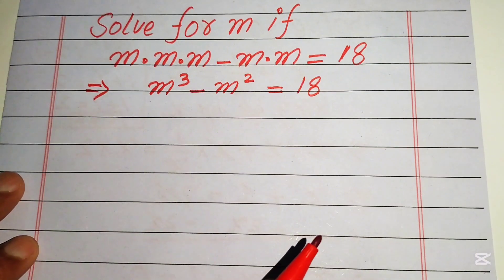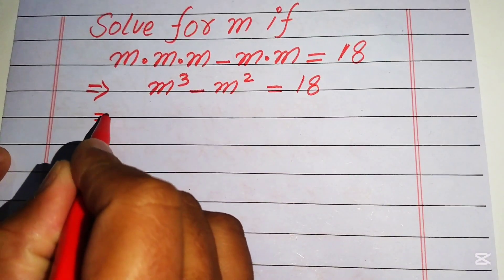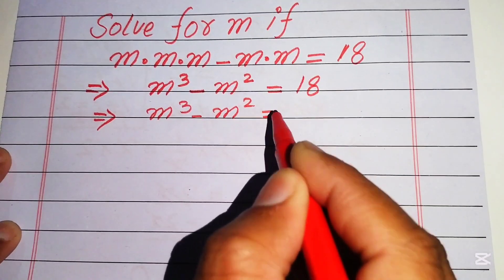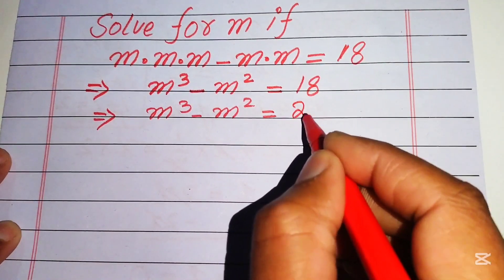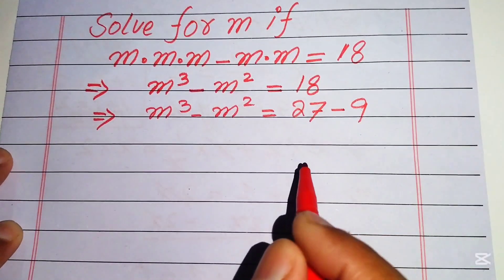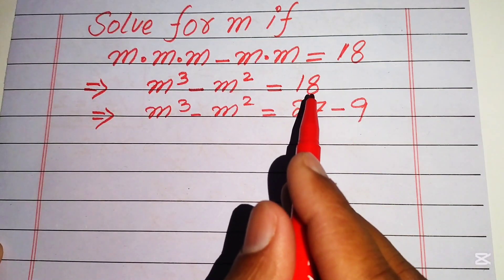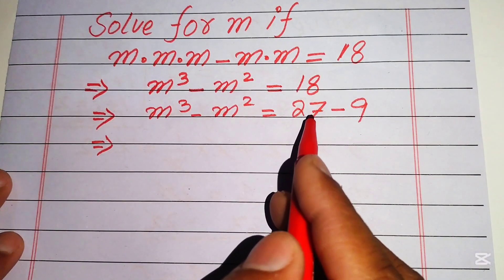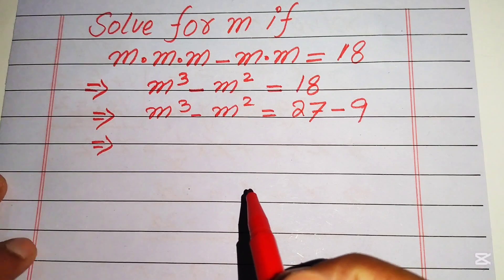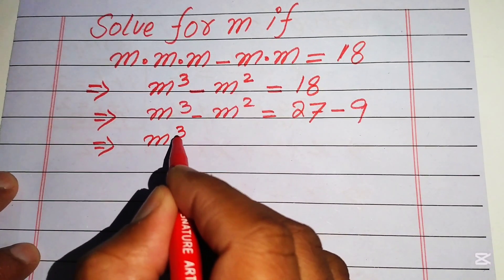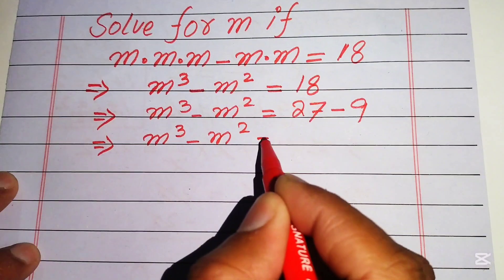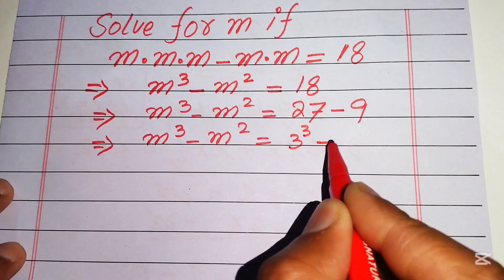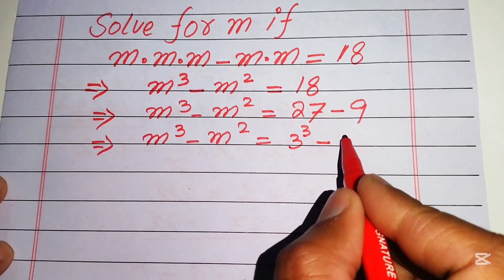We need to focus on the right-hand side, where we have 18. We write it as m cubed minus m squared equals 27 minus 9. We know that 27 minus 9 equals 18. Now we write 27 and 9 in prime factor form: m cubed minus m squared equals 3 cubed minus 3 squared.